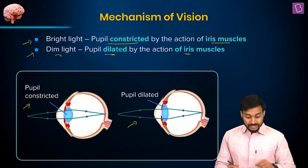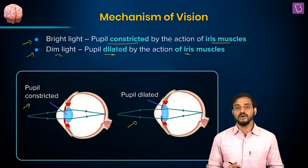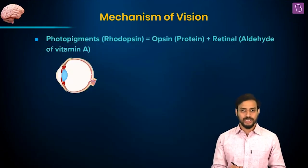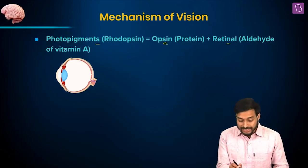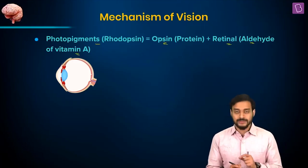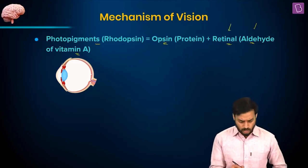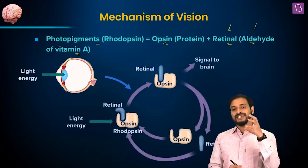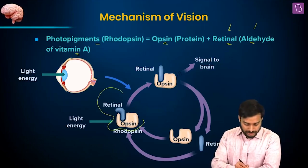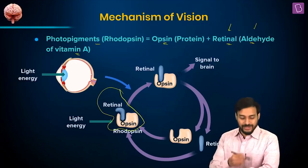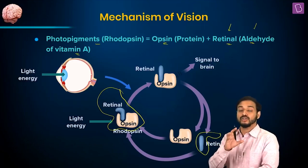This is how the amount of light entering the eye is monitored — the same mechanism we used to develop cameras. Now, talking about photopigments: rhodopsin is opsin, the protein, plus retinal, which is the aldehyde of vitamin A. So rhodopsin = opsin + retinal. When there is light, it results in the dissociation of retinal from opsin. Opsin is now free and can undergo structural changes.